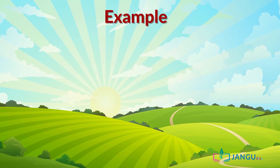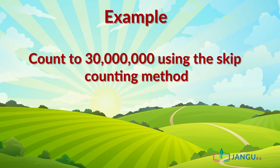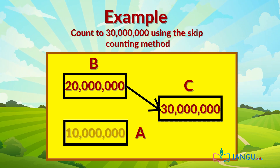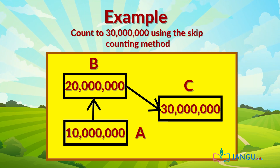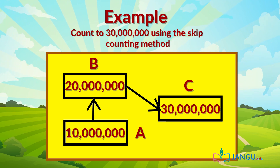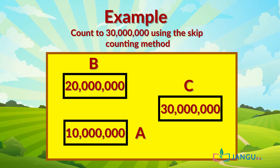Now take a look at this example: count to 30 million using the skip counting method. This example shows that to get the number in box C we have to add 10 million to the number in box B, and in the same way, to get the number in box A we have to subtract the number in box B from the number in box C. What determines the pattern here is the arrangement of arrows and simple addition and subtraction skills.